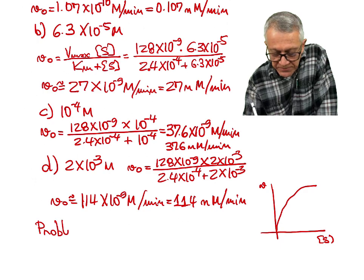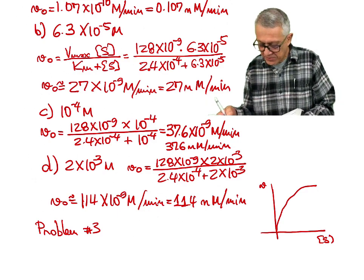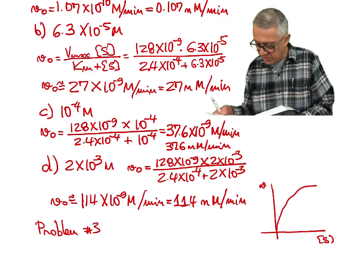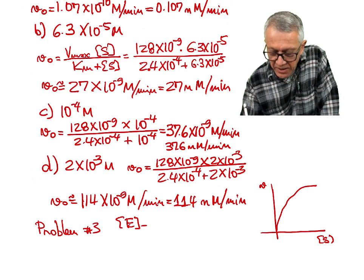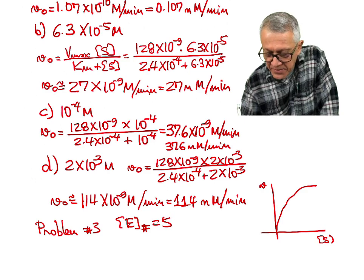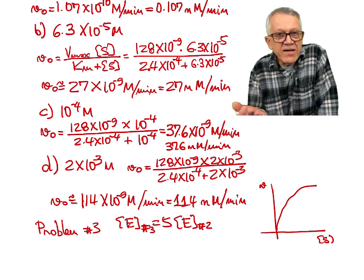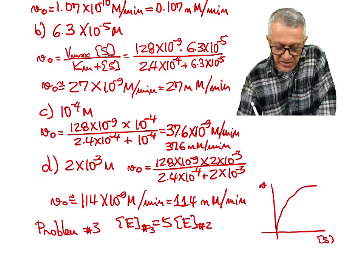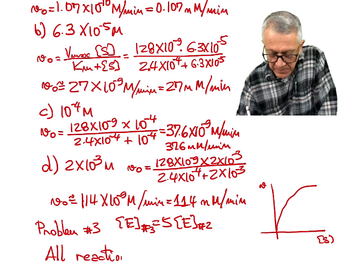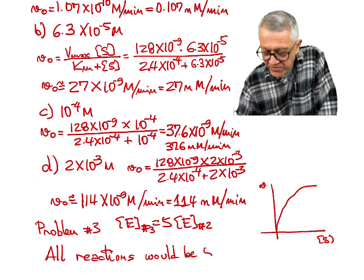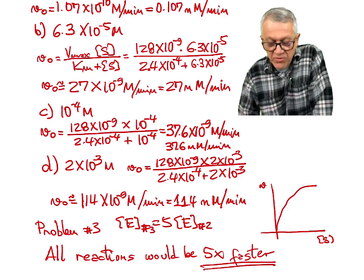Now for problem number 3 — that's why I wanted to do these problems in tandem, because they are related. Problem 3 says: if the enzyme concentration in practice problem 2 was increased 5-fold, what would the initial velocities be at each of the given substrate concentrations? We know that if the enzyme concentration is 5 times greater, the reaction will be 5 times faster because we have 5 times more enzyme. So there is no need for additional calculation — just multiply each answer from problem 2 by 5.